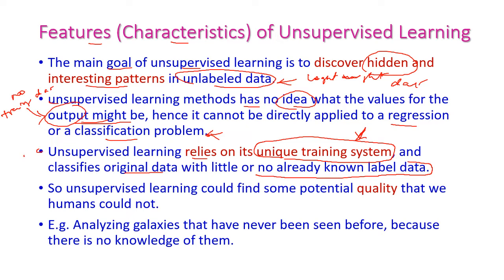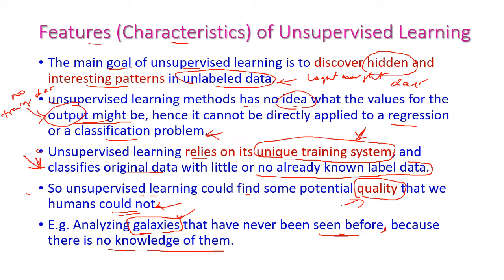Unsupervised learning is used to classify original data because there is no training data. It could find some potential quality that humans cannot — when compared to supervised methods like regression or classification. For example, consider galaxies in our universe. Some galaxies we have never seen before. But if we give that data to clustering, we can analyze and get some knowledge from the galaxies, because we don't have any prior knowledge about them. By using unsupervised learning or clustering, we will get some knowledge from this previously unseen data.